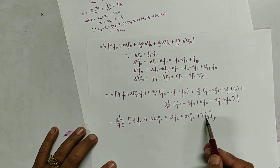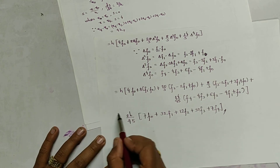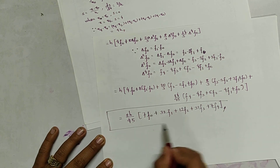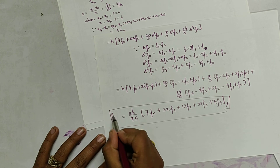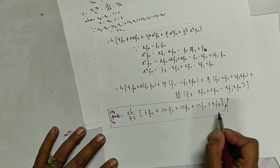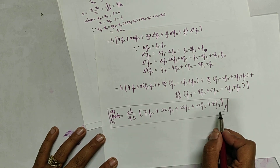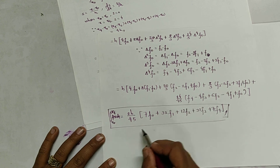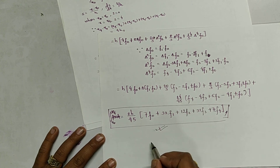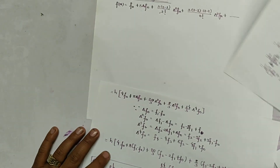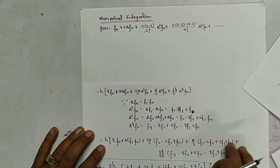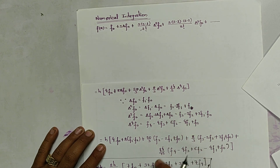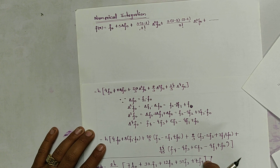We get the final result in terms of f0, f1, f2, f3, and f4. The integral from x0 to x4 of f(x)dx gives this required rule for Boole's method, also known as Boole's rule. In this way we have derived Boole's rule for numerical integration. In the next video I will be deriving similar expressions for the trapezoidal and Simpson methods.